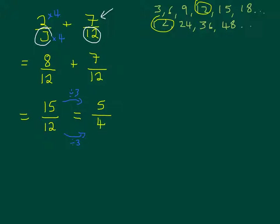I can simplify this further because this is an improper fraction — it's top-heavy — so I'm going to change it into a mixed number. How many 4s are in 5? Well, 1. And what's the remainder? 1 four is 4, so the remainder to get to 5 is 1, and the denominator 4 stays the same. So my answer is 1 and 1 quarter. If you want to know more about converting between mixed numbers and improper fractions, please watch the other video.